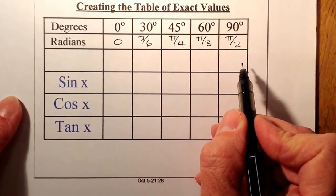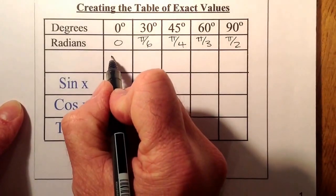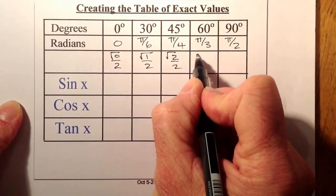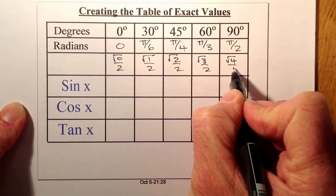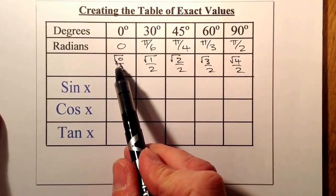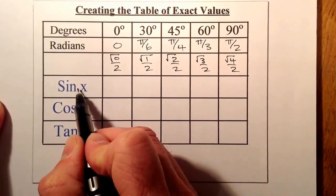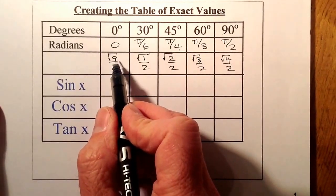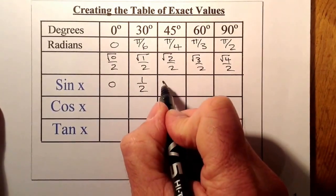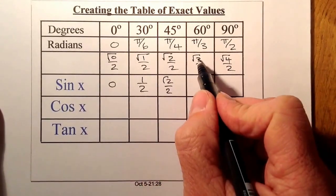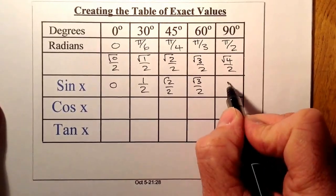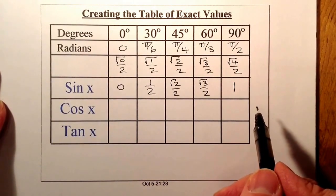I'm going to use a pattern going root 0 over 2, root 1 over 2, root 2 over 2, root 3 over 2, and root 4 over 2. All I need to know is 0 to 4 in the root all over 2. Working that out: root 0 is 0, divided by 2 is 0. Root 1 is 1, so that's a half. Root 2 over 2. Root 3 over 2. And the square root of 4 is 2, so 2 divided by 2 is 1. There I've got my sine row already worked out.